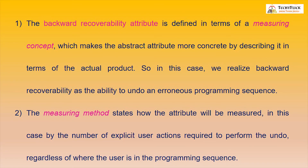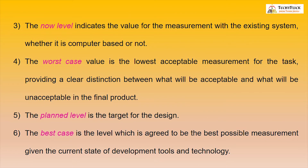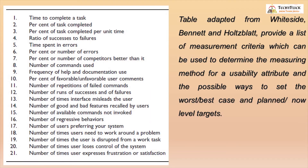The backward recoverability attribute is called the measuring concept. The measuring method states how the attribute will be measured. The now level indicates the value of the measurement with the existing system. Worst case represents the lowest acceptable measurement of the task. Planned level is the target for the design. And best case is the level agreed to be the best possible measurement.